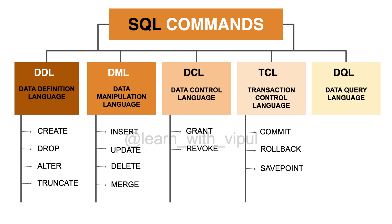The third TCL command is SAVEPOINT, which is used along with the ROLLBACK command. For example, let's say you are entering data in a table and you have inserted 10 records. After inserting those 10 records, you declare a savepoint. Then you start inserting new records, and after inserting five more, you realize you have entered corrupted data. You can then rollback the changes made after the savepoint and return to that point. Please note that TCL commands are only used with DML commands, because other operations like creating a table, dropping a table, or granting access are considered permanent — so we don't need to commit or declare savepoints for those.